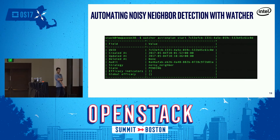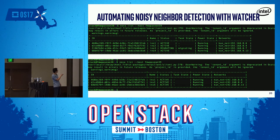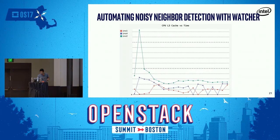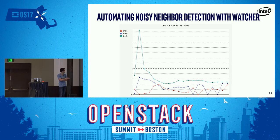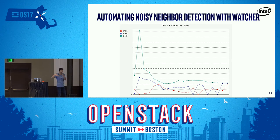To run the action plan, all you need to do is run watcher action-plan start with the ID, and everything's done behind the scenes — live migration has started. Once this live migration has been completed, this is what the L3 cache graph looks like. I'm not saying this is noiseless — there is still a lot of noise after just one cycle — but over a period of time and a bunch of cycles, it's supposed to move towards a noiseless state.